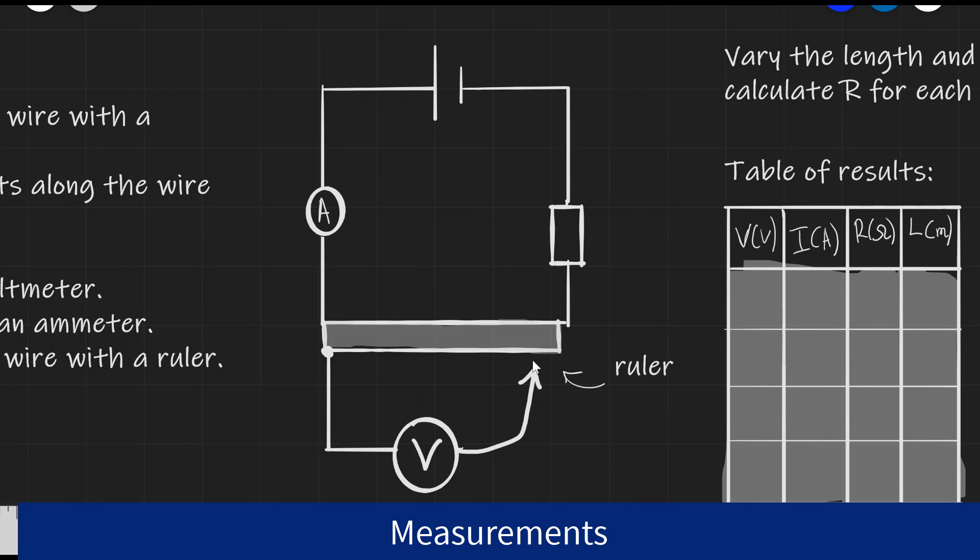This could be done either with a jockey device or with crocodile clips. But crucially, what this circuit allows us is to vary the length of this piece of wire from here, let's say, to here, and measure the PD across it, measure the current for it, and hence calculate the resistance of this piece of wire.